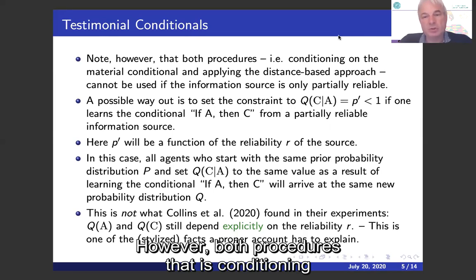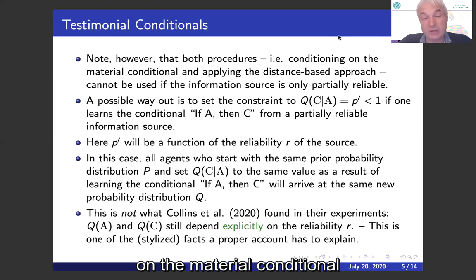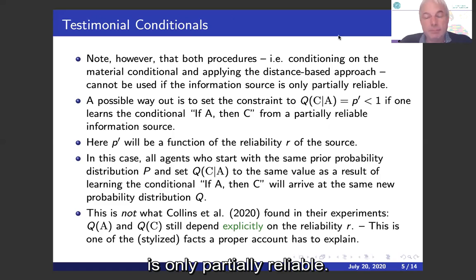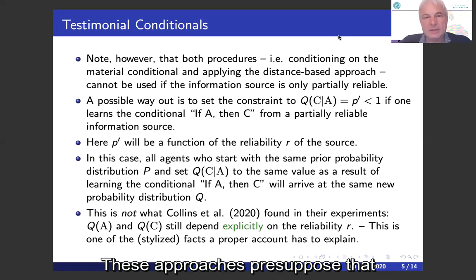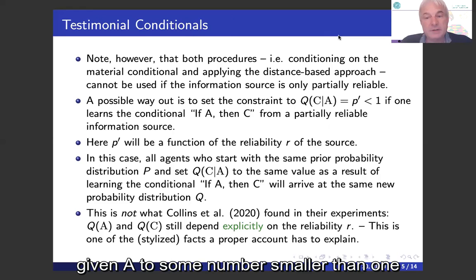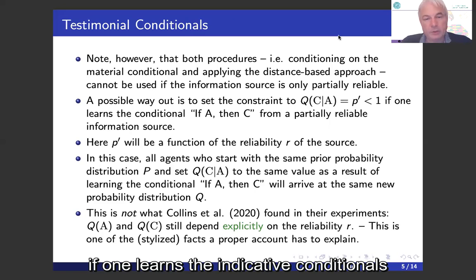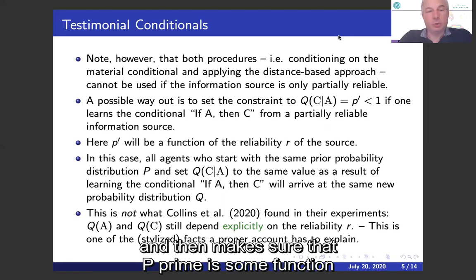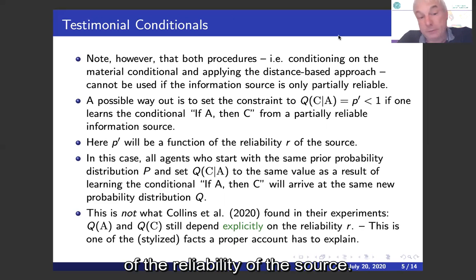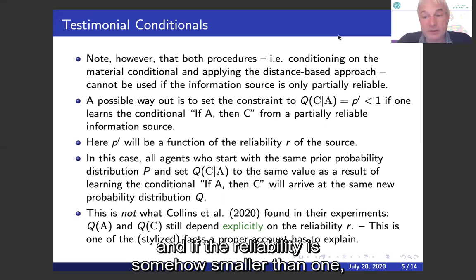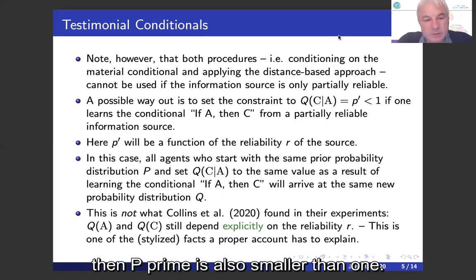However, both procedures — conditionalization and the distance-based approach to Bayesianism — cannot be used if the information source is only partially reliable, since these approaches presuppose a perfectly reliable source. A possible way out is to set the constraint Q(C|A) to some number P' smaller than 1 when learning the conditional 'if A then C' from a partially reliable source, where P' is some function of the reliability of the source. For example, if the source is fully reliable — that is, the reliability parameter equals 1 — then P' equals 1, and if the reliability is smaller than 1, then P' is also smaller than 1.